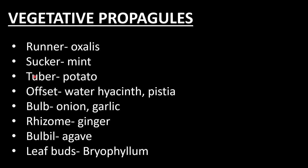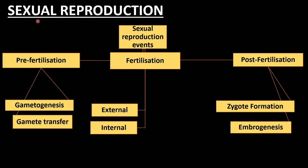Vegetative propagules present in plants include: runners in Oxalis, sucker in mint, tuber in potato, offset in water hyacinth, bulb in onion and garlic, rhizome in ginger, bulbil, and leaf buds in Bryophyllum. Our main point to study is sexual reproduction.